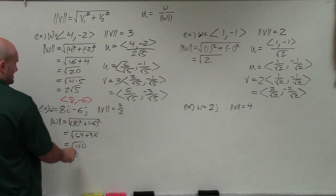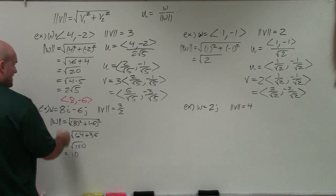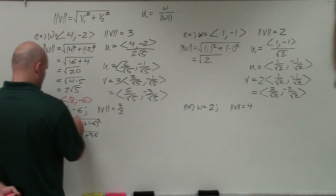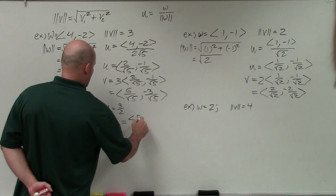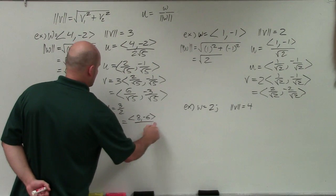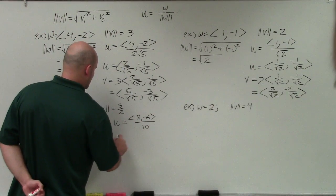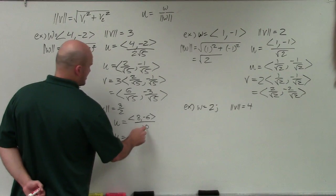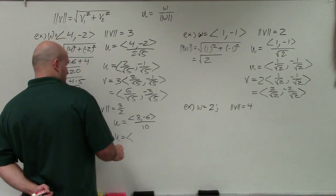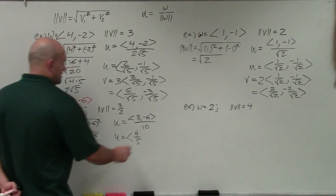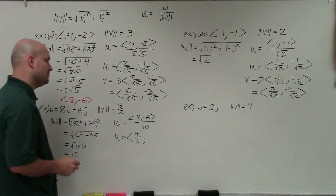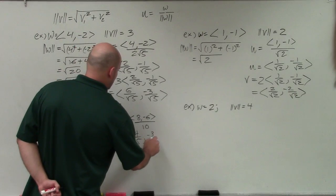Then I'm going to take my unit vector, which is going to equal the component form 8 comma negative 6 divided by my magnitude. I'm going to simplify this. So I do 8 divided by 10, which is going to be 4 fifths, and then I'm going to multiply negative 6 over 10, which is going to be negative 3 fifths.